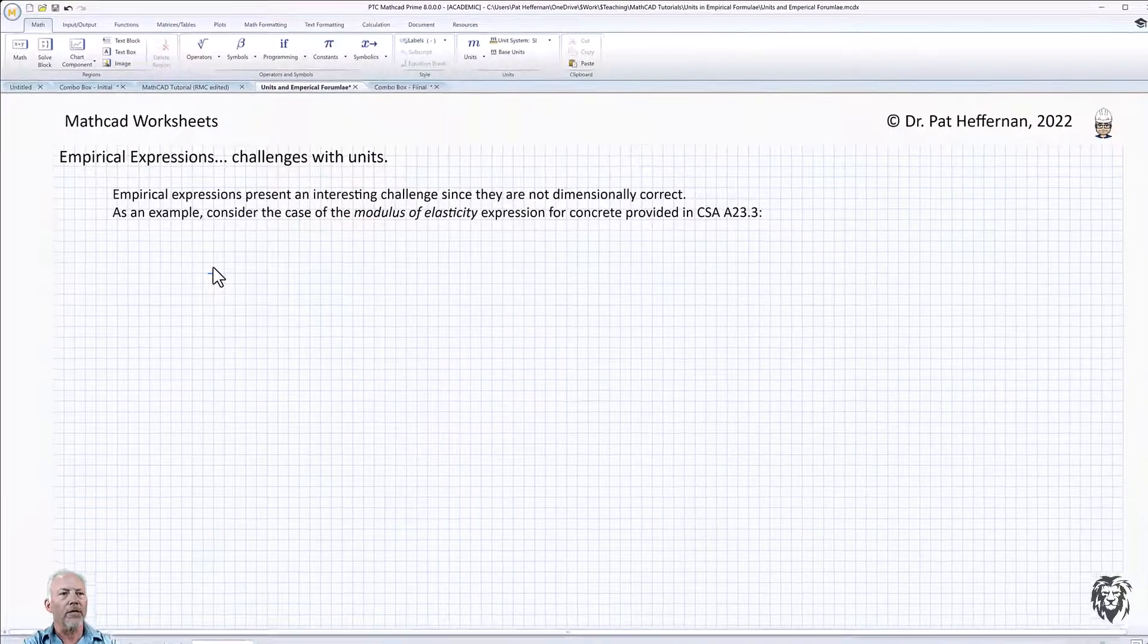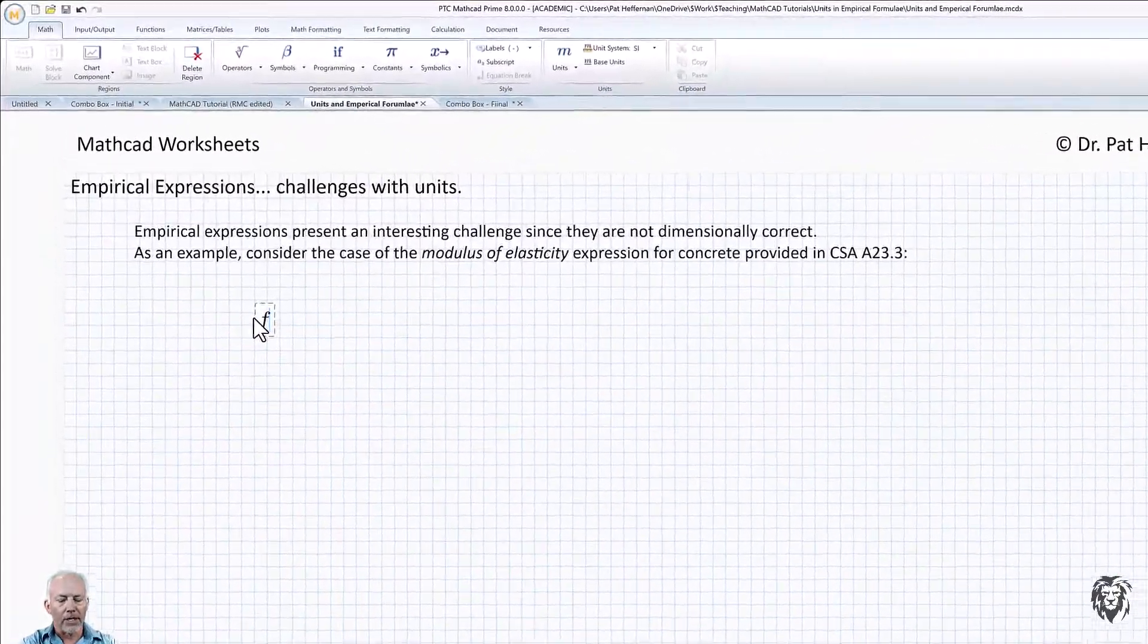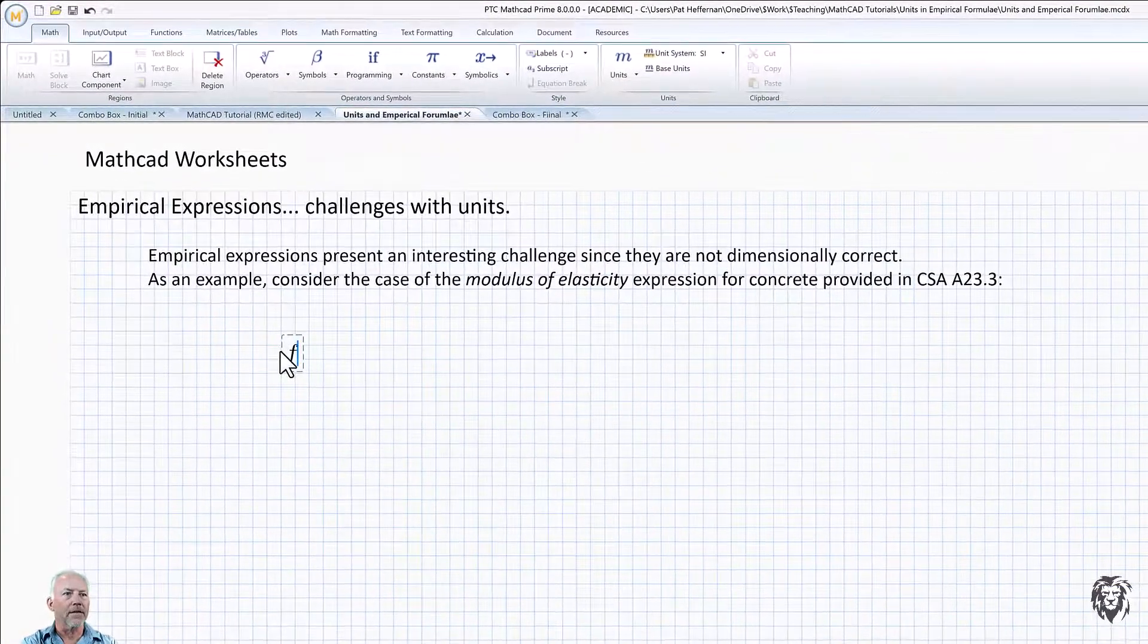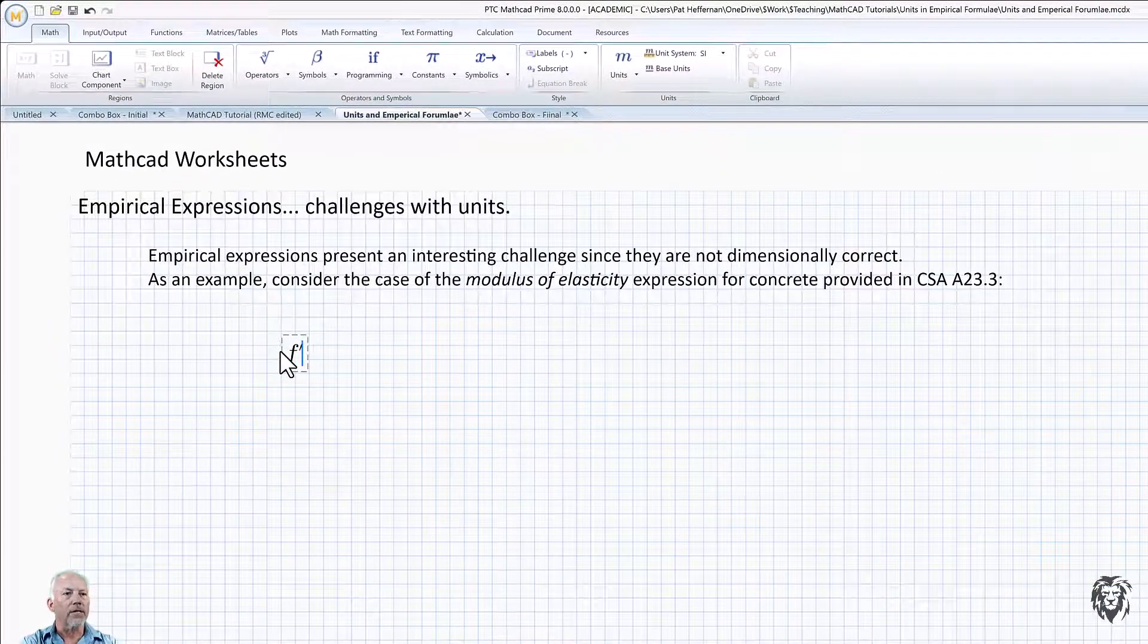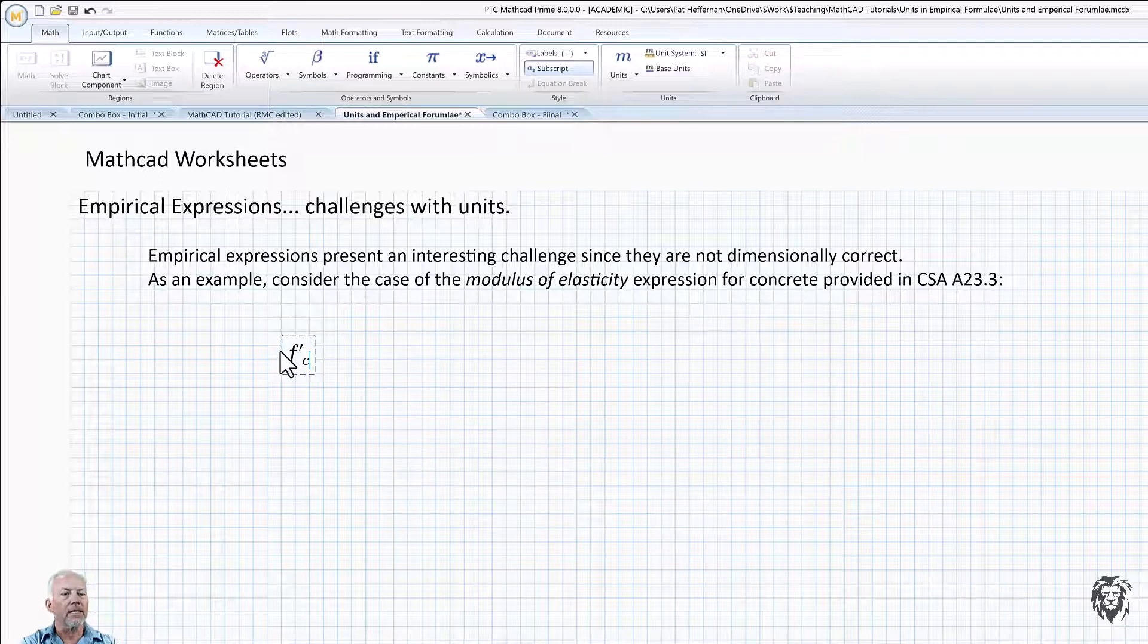We're going to use concrete as our example. So we're going to start with the compressive capacity of the concrete. So our F prime C in this case, and we're just going to make it 30 megapascal concrete.